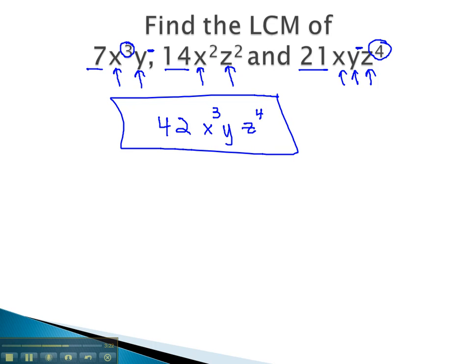With variables, we can quickly identify the least common multiple by using all the variables and attaching the highest exponent on each variable.